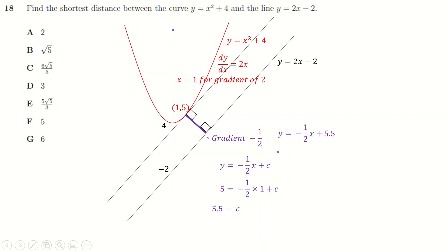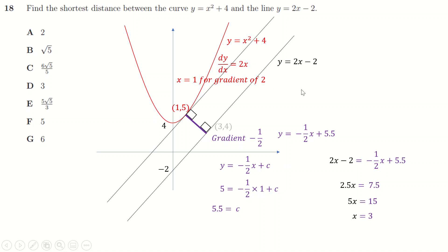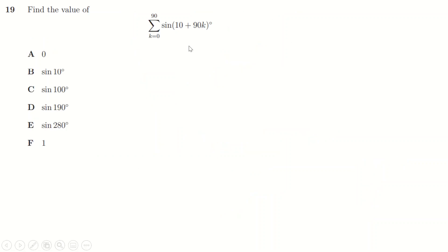Setting the perpendicular line equal to the original line to find the closest point on the line: solving gives x = 3, y = 4, so the point is (3, 4). The distance between (1, 5) and (3, 4) is √((3-1)² + (4-5)²) = √(4 + 1) = √5.